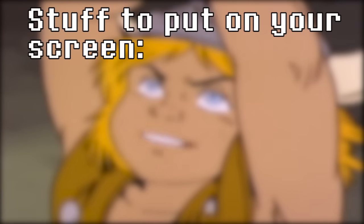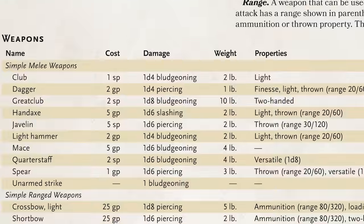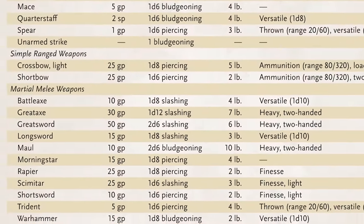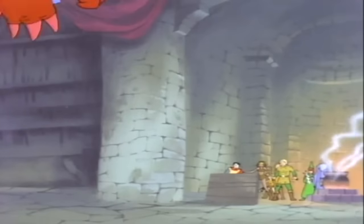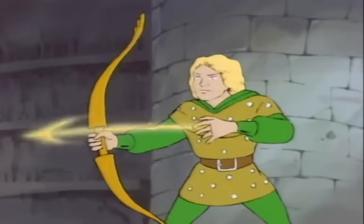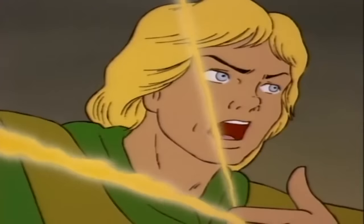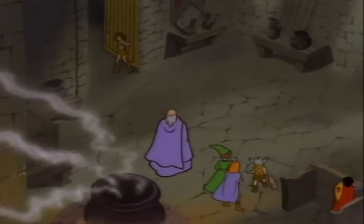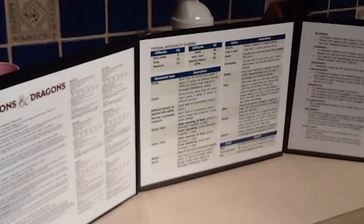One thing I also think is super useful — that I didn't realize until I started playing Edge of the Empire — is a weapon damage and gear prices table: basically a list of weapons, gear, and items, how much they cost, and what they do. You can print off a weapon stats table for whatever game you're playing, so you always know how much damage a weapon does or how much gold things cost.